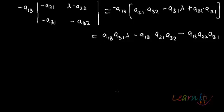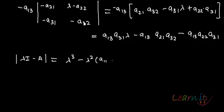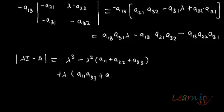Now, these are the three separated terms. The sum of all three expansions gives us: λ³ minus λ²·(A11 plus A22 plus A33), then the lambda terms: A11·A33 plus A11·A22 plus A22·A33 minus A23·A32.